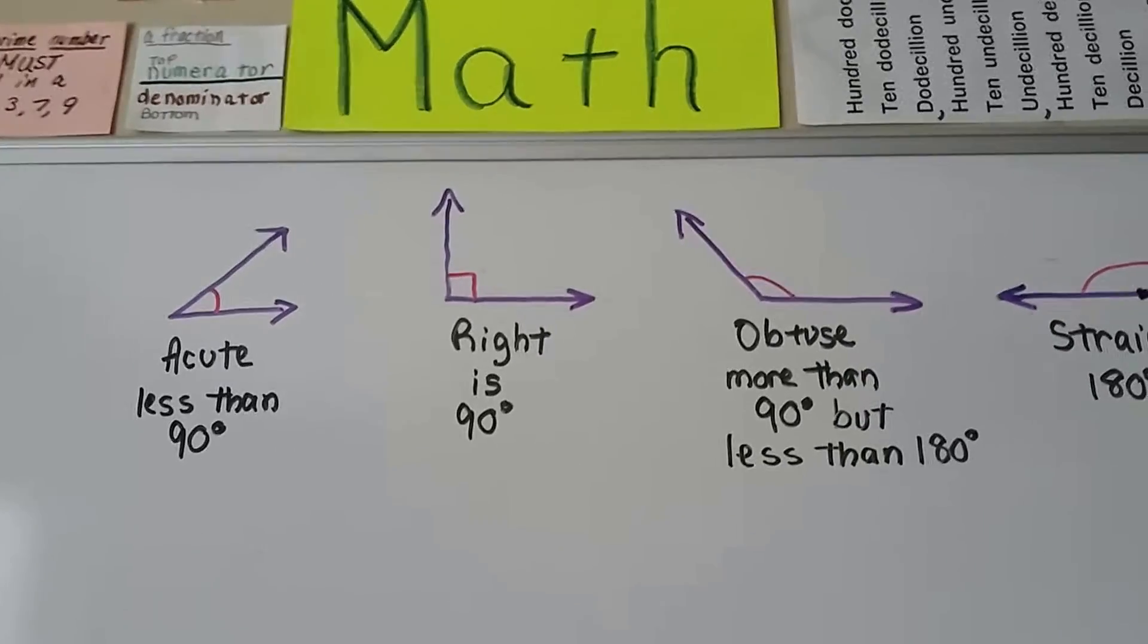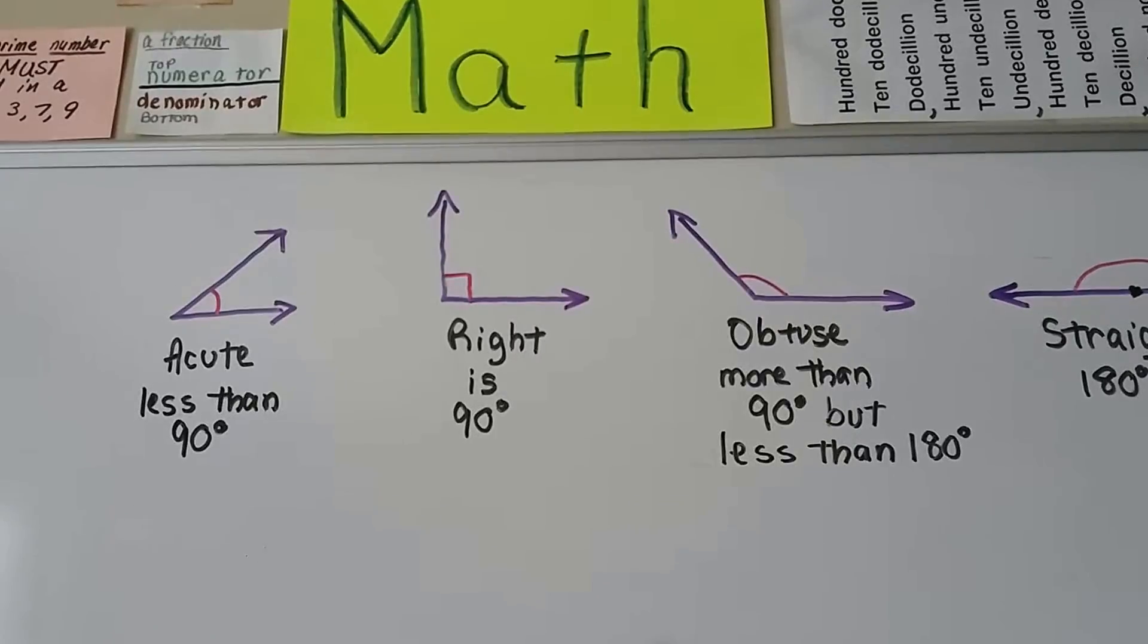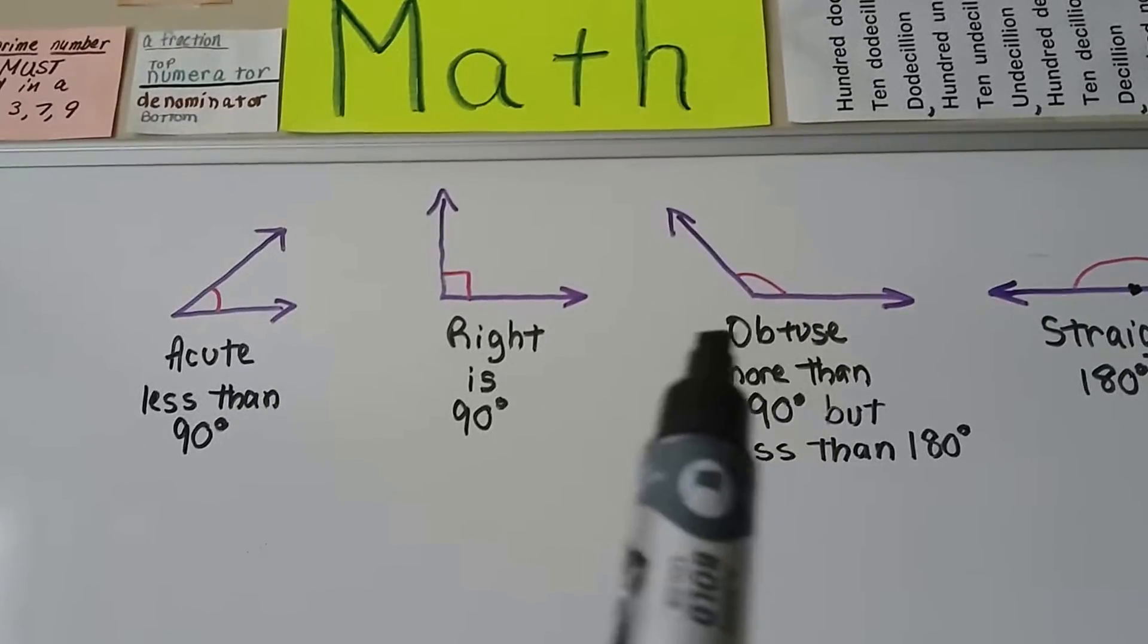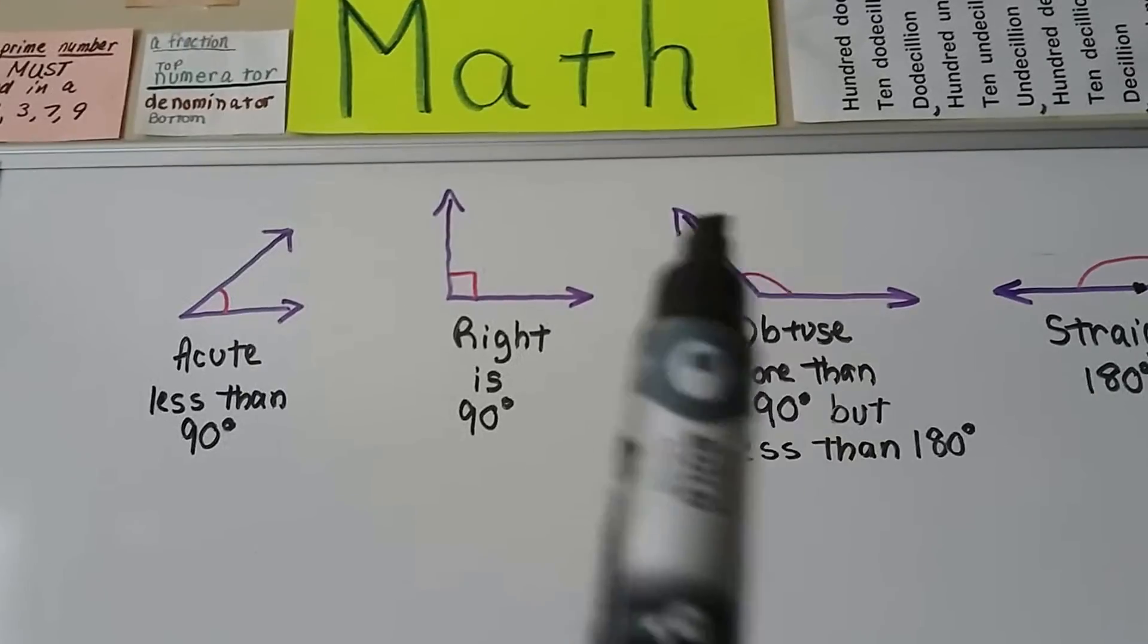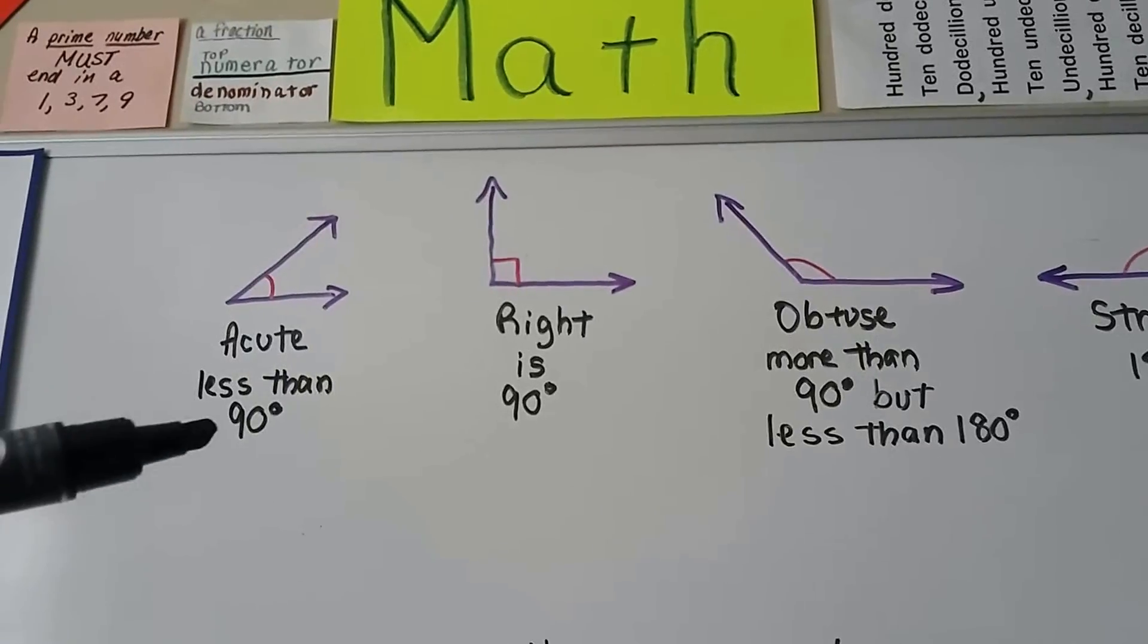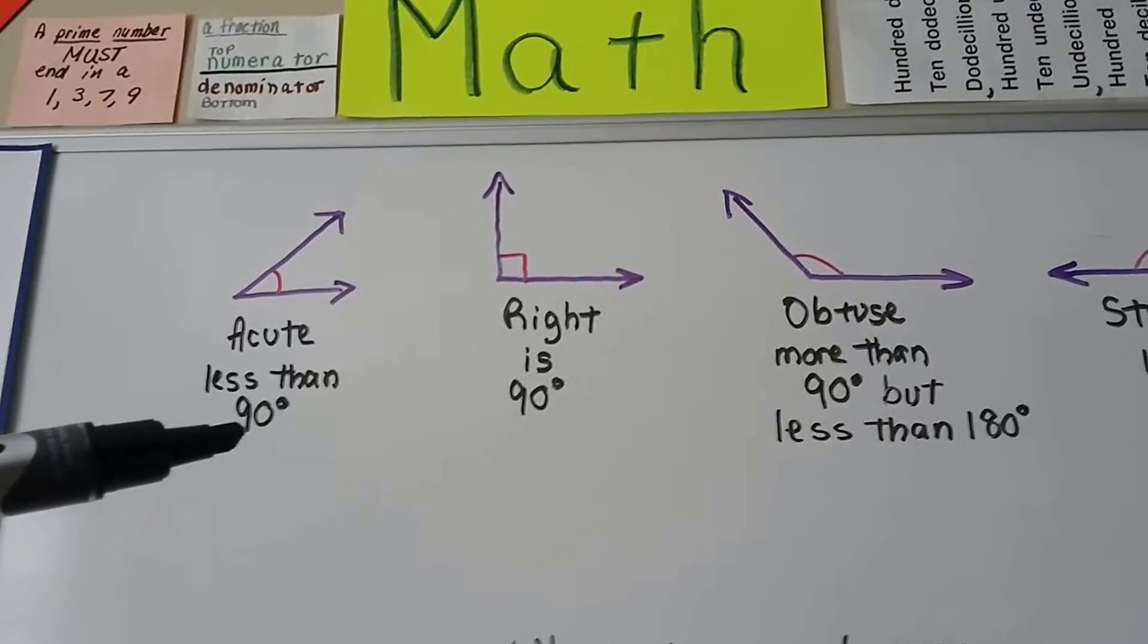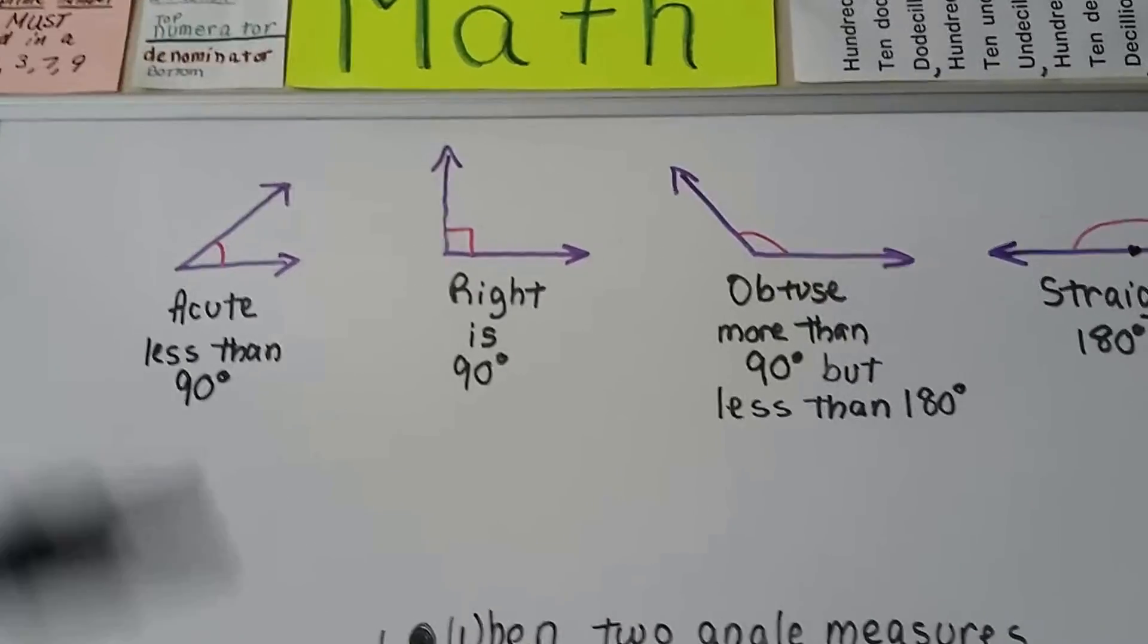An obtuse angle is more than 90 degrees but less than 180. So the way I remember this is, OB is like obese. So that's the obese angle. That's the fat angle. The cute one is the little cute one that's less than 90. And it could be 89.999 degrees and still be acute because that's less than 90.